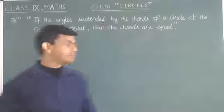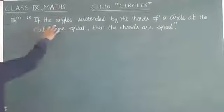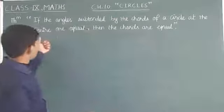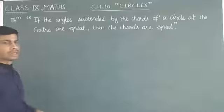Let's discuss the next theorem. It states that if the angles subtended by the chords of a circle at the center are equal, then the chords are equal.